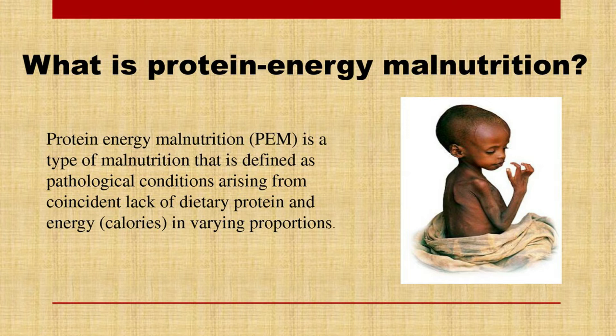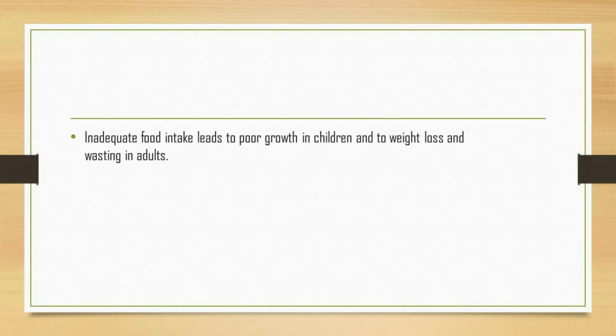PEM is most prevalent in Africa, Central America, South America, the Middle East, and East and Southern Asia. Homeless people and those living in substandard housing in inner cities and rural areas have been diagnosed with PEM. In addition to those living in poverty, elderly individuals who live alone and adults who are addicted to drugs and alcohol are frequently victims of protein energy malnutrition.